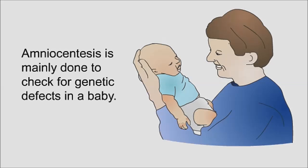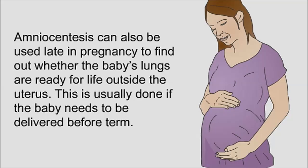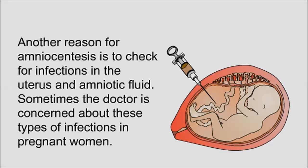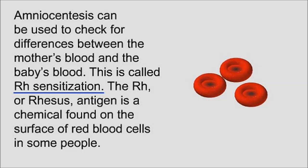Amniocentesis is mainly done to check for genetic defects in a baby. It can also be used late in pregnancy to find out whether the baby's lungs are ready for life outside the uterus — usually done if the baby needs to be delivered before term. Another reason for amniocentesis is to check for infections in the uterus and amniotic fluid.